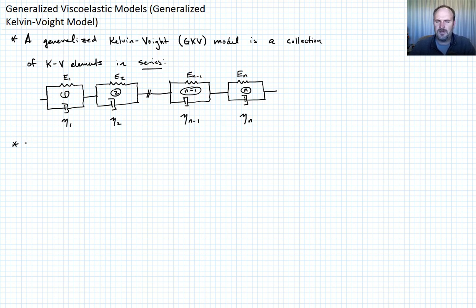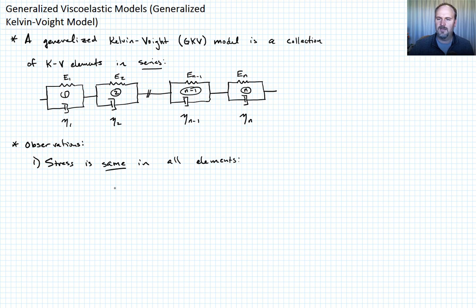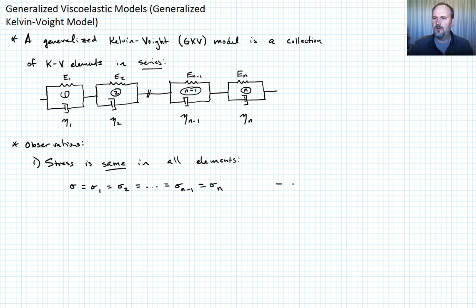Let's make a couple of observations, just like we did with the Maxwell model. Observation number one: what about the stress in this generalized model? The stress in element one must equal the stress in element two by virtue of them being connected in series. So the stress is the same in all elements. We write this as sigma equals sigma_1 equals sigma_2 equals ... equals sigma_{n-1} equals sigma_n. Call that equation one.